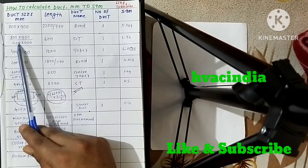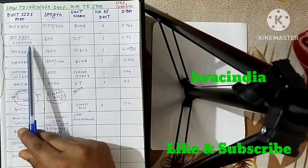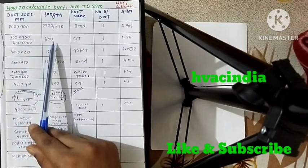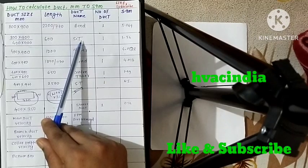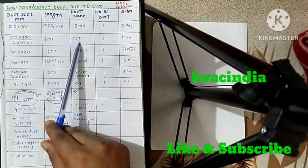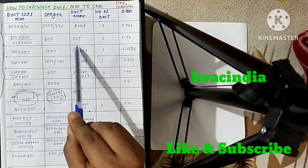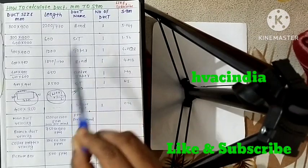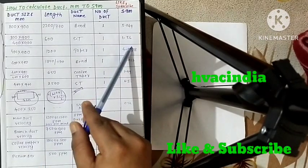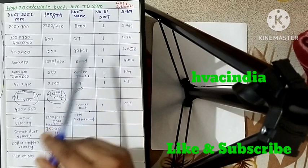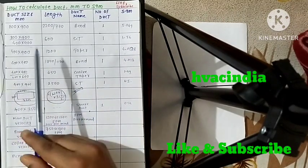The same way we have 800 by 900 by 400 into 900, length is 600. This piece is ST piece, this is a single piece, 1 piece, and this one piece is 1.56 value is 1 square meter.